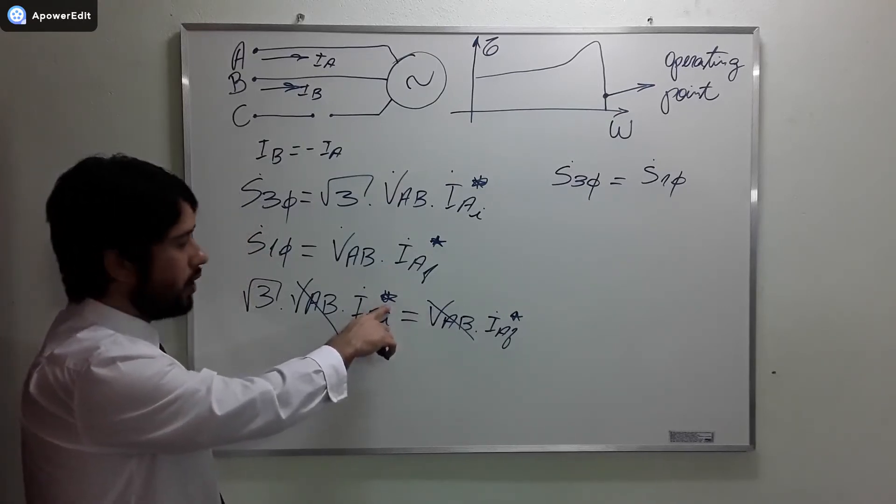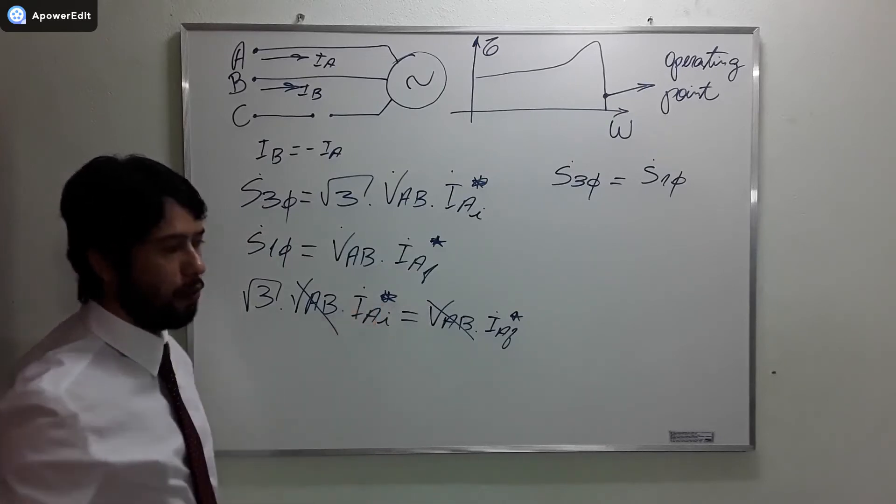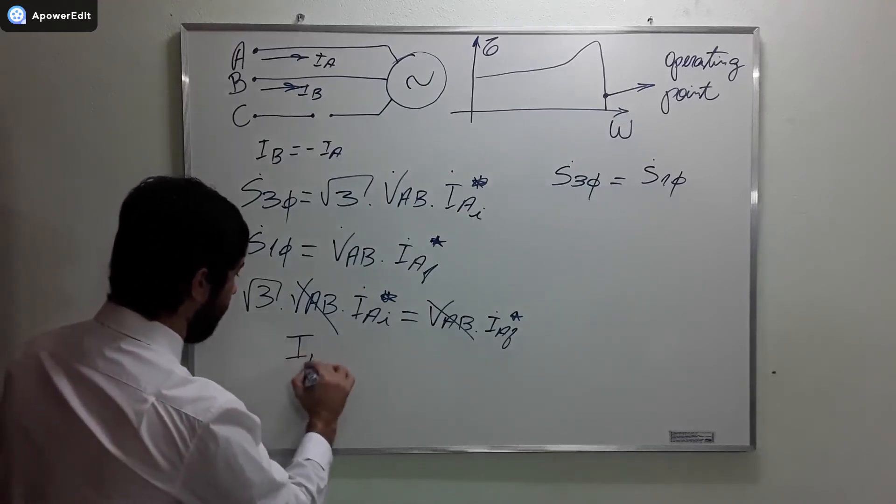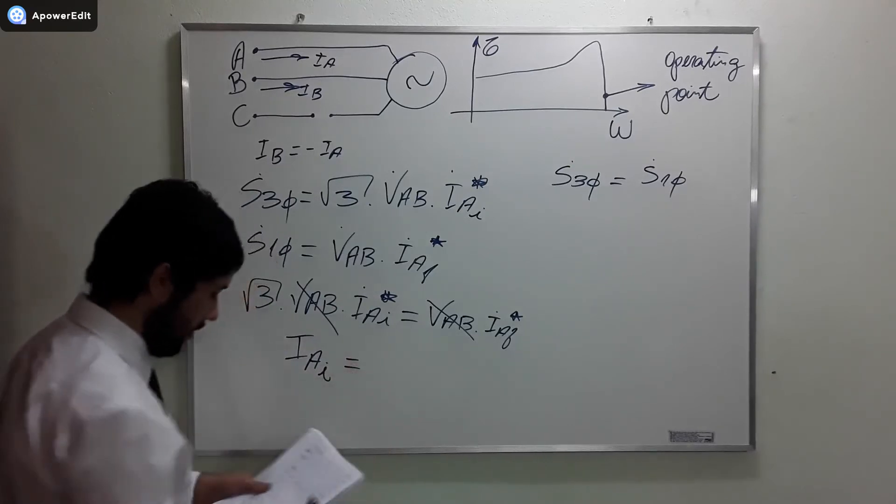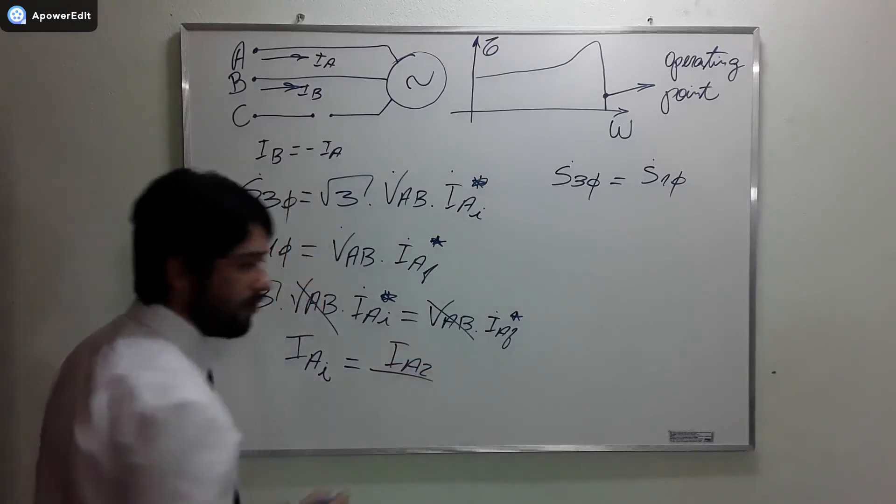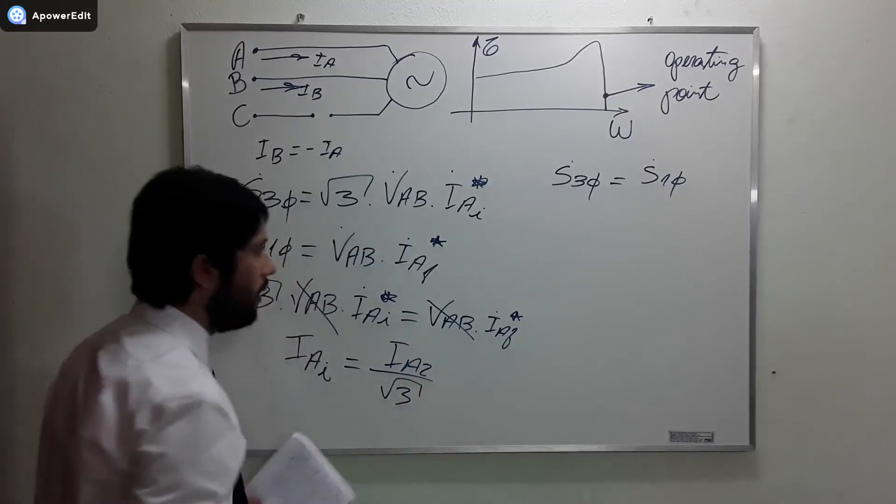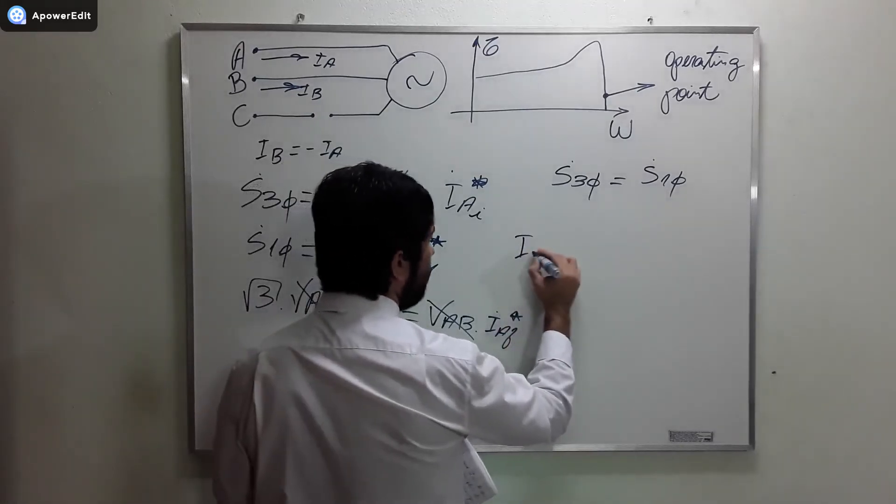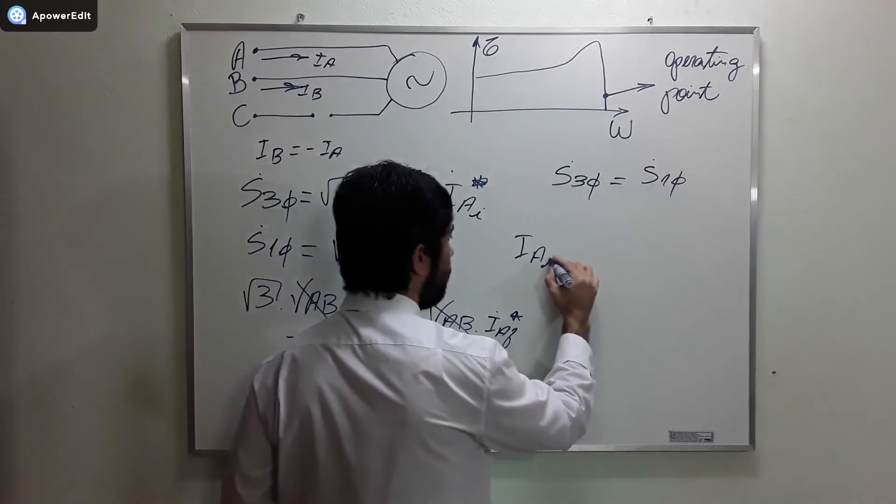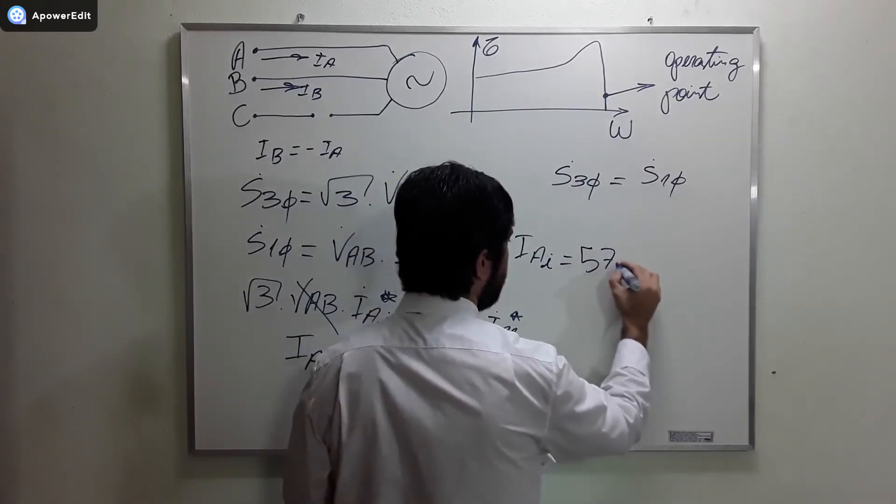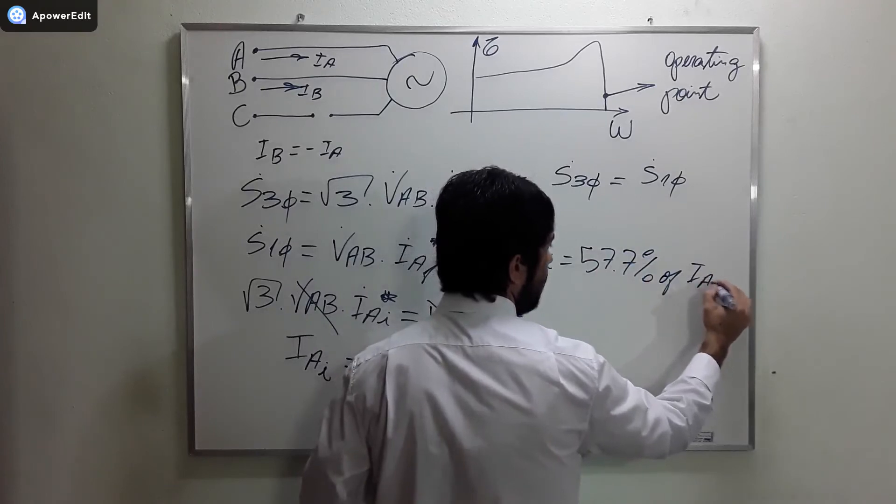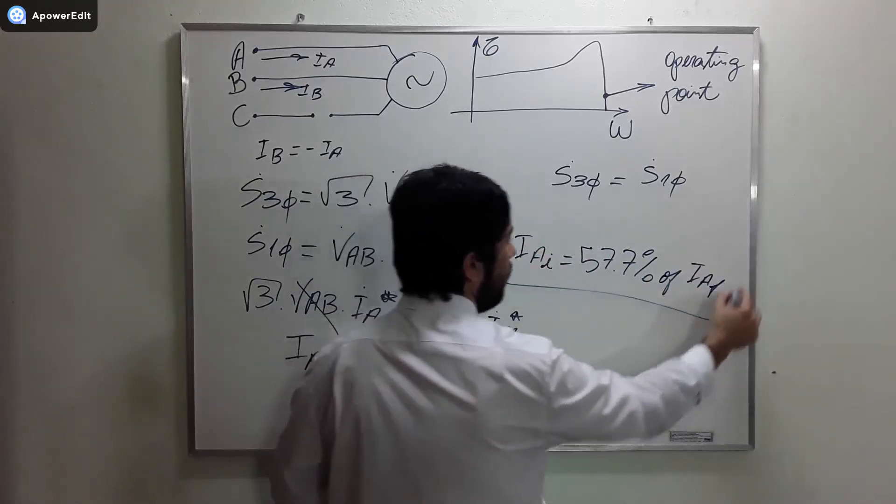VAB times IA being equal to VAB times IAF. Do you guys fully comprehend what I did here? I can cancel this with this. And then here is the complex conjugate of the current, but we don't need to operate with the complex conjugate. We can simply use the current. And then we are going to end up reaching that the value of the initial current is equal to the second current divided by the square root of 3. And then we ultimately reach that the initial current is equal to 57.7% of IA final current.